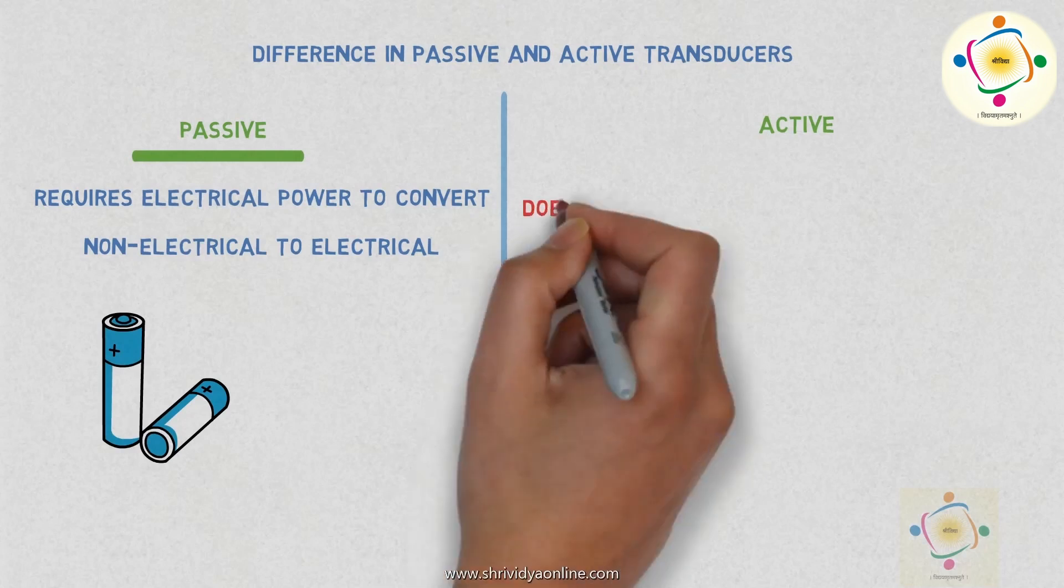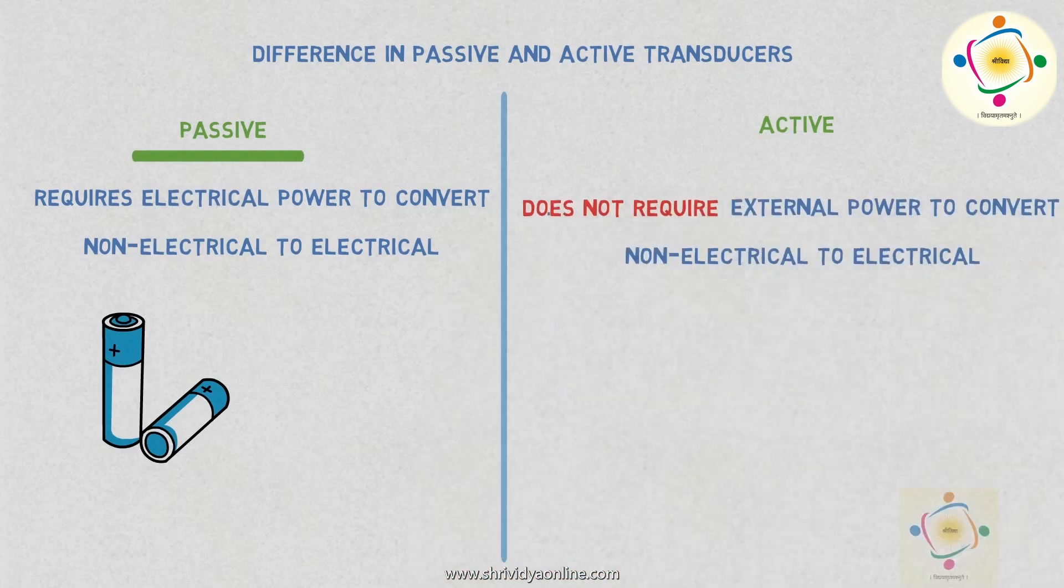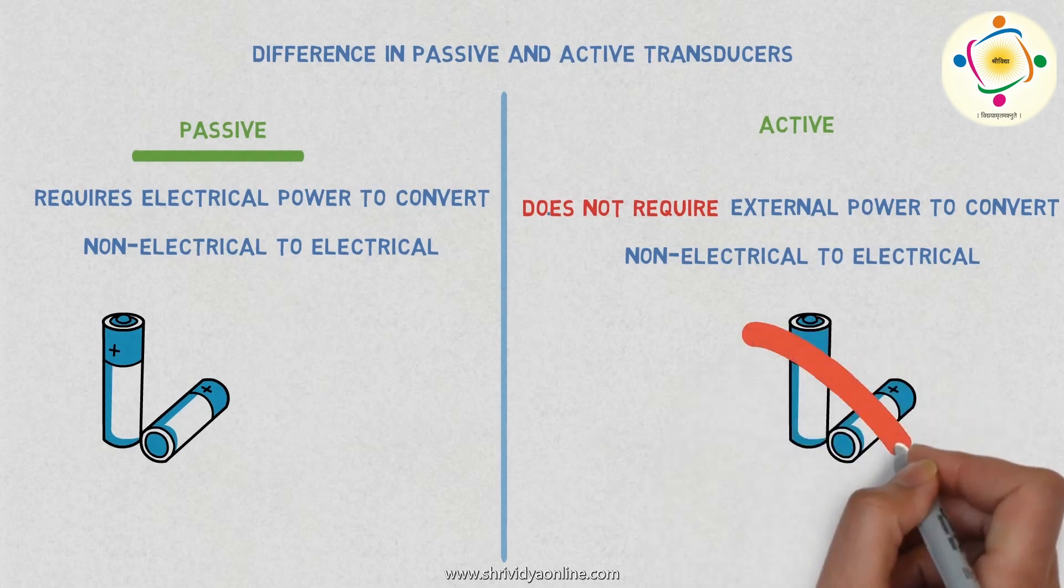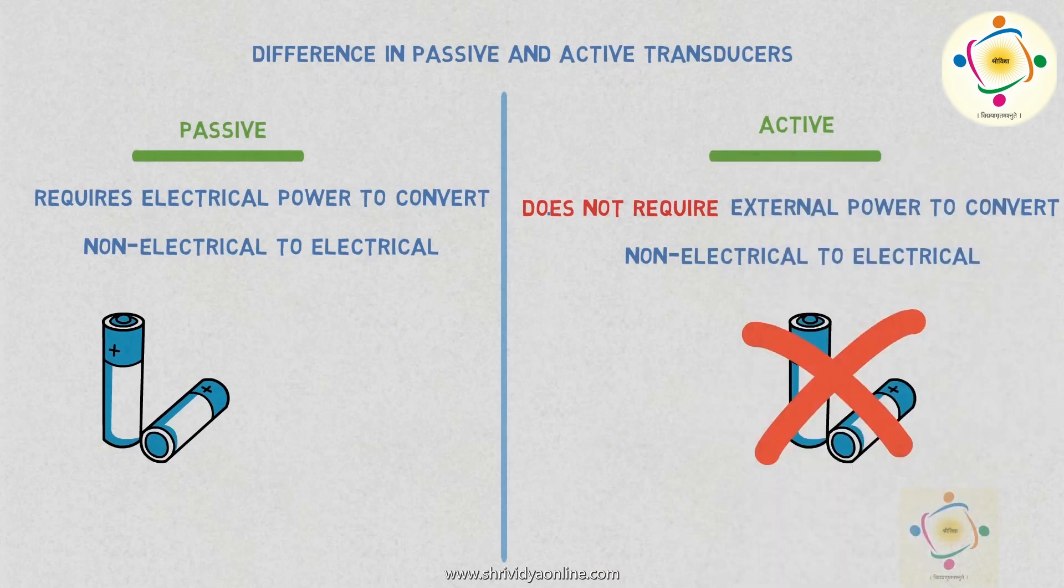And a transducer which does not require any external power for conversion is known as an active transducer. This is also known as a self-generating transducer.